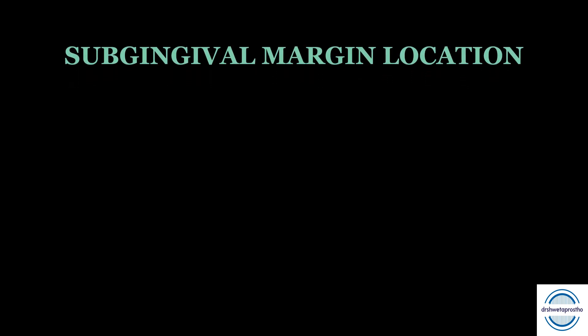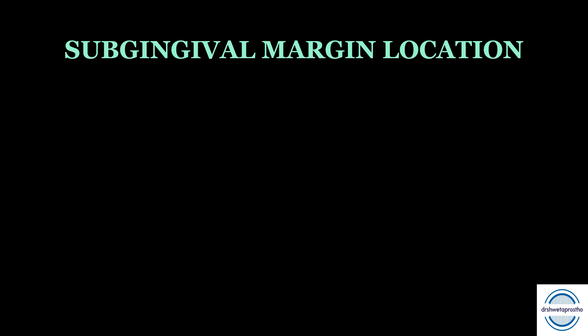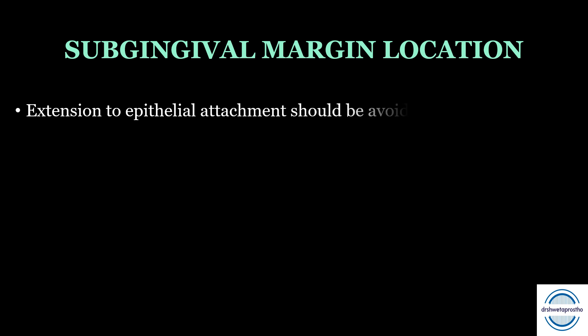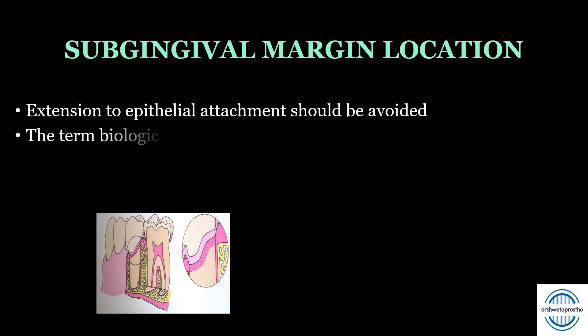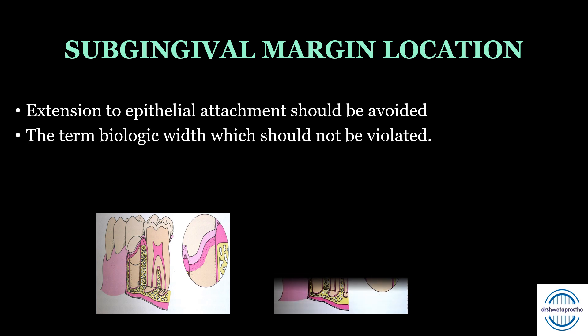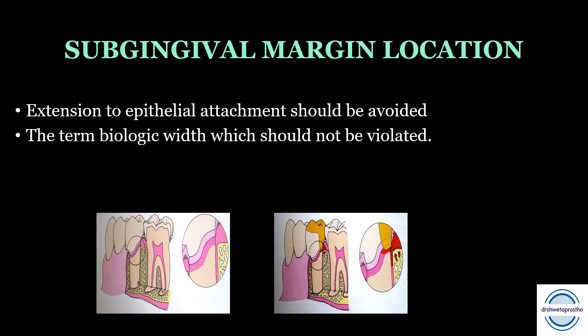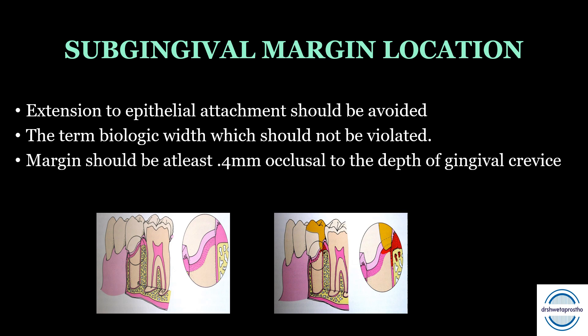When placing the subgingival margin, its location should follow the biological principles of tooth preparation. Extension of the margin to the epithelial attachment should be avoided. The biological width should not be violated — the margin should be at least 0.4 mm occlusal to the depth of the gingival crevice, as seen in the picture.